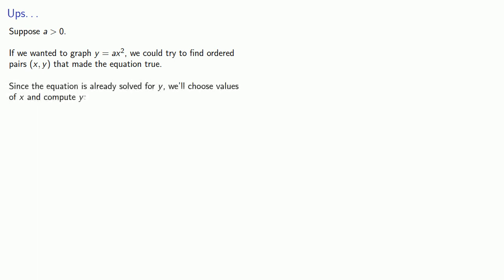Suppose a is greater than zero. If we wanted to graph y equals ax squared, we could try to find ordered pairs x, y that make the equation true. And since the equation is already solved for y, we'll choose values of x and compute y.